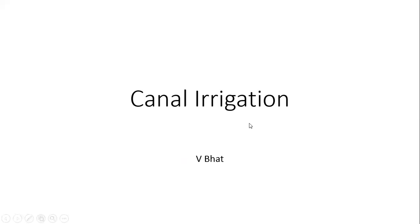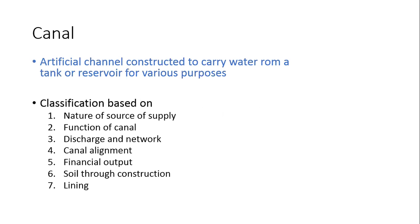Hello everyone. In this segment, we shall see the classification of canals used for irrigation. Canals are the artificial waterways constructed to allow the passage of boats or ships inland or to convey water for irrigation. In civil engineering, the term canal refers to the artificial channel which is constructed to carry water from a river, tank, or reservoir for various purposes.